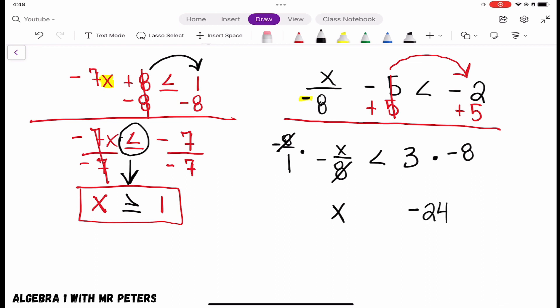But what about this inequality symbol? Did you guys notice how we multiplied by a negative x? So once we do that, our sign has to flip. So our new answer would be x is greater than negative 24.